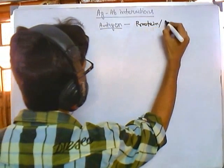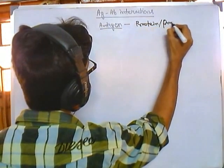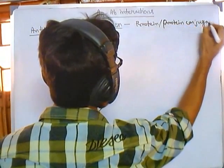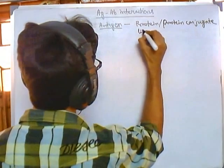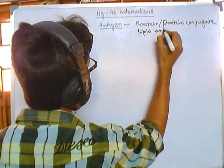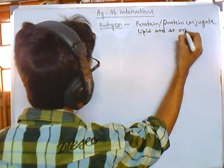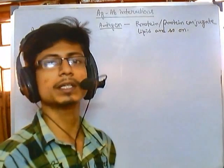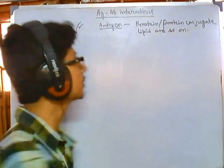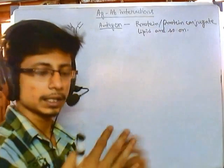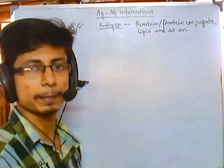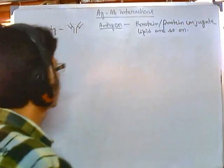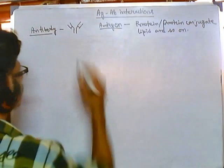So antigens can be protein, protein conjugate, lipid, and so on. The antigen can be a single molecule or it can be any conjugate molecule. Whenever I say protein conjugate, there can be other types of large molecules, or small molecules like hapten, that can be attached with an antigen. So these are the two things that we are going to talk about.